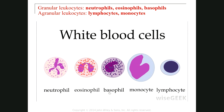The second group of leukocytes are called agranular leukocytes. As you see, in these two leukocytes we don't have any granules in the cell. In the first one, the nucleus is kidney shape or bean shape. And in the second one, the nucleus is completely round. These two leukocytes are classified as agranular leukocytes.